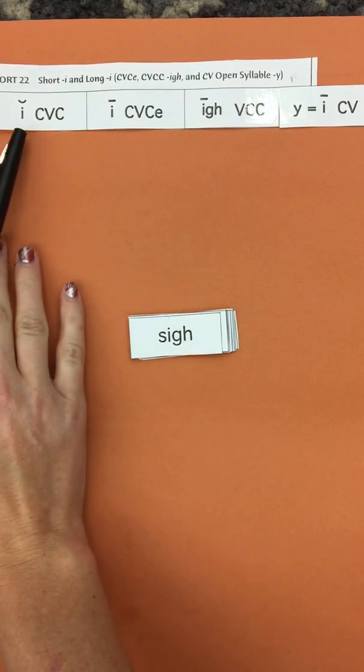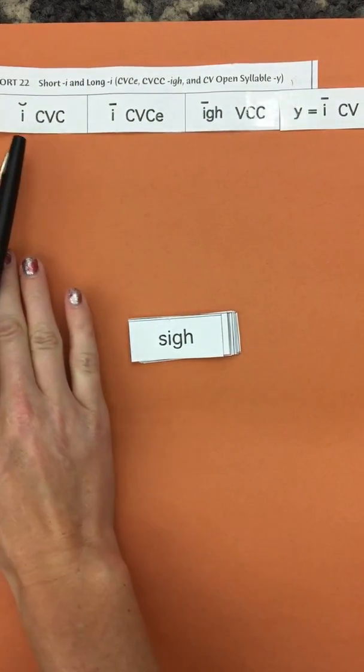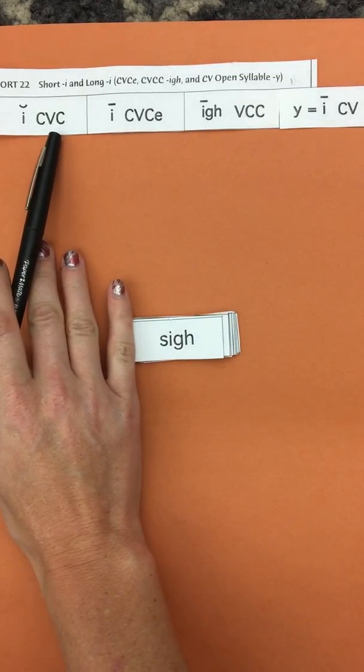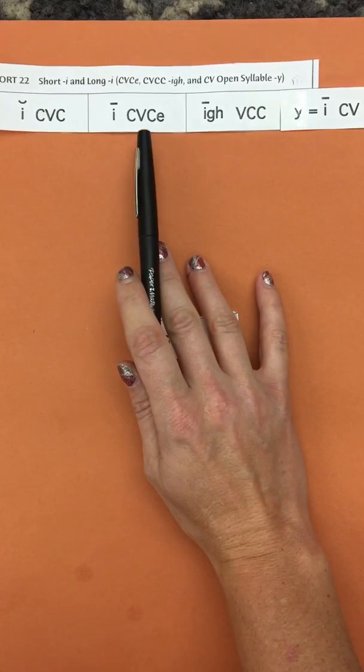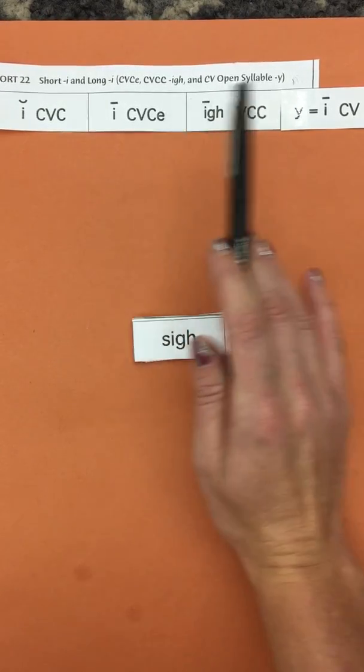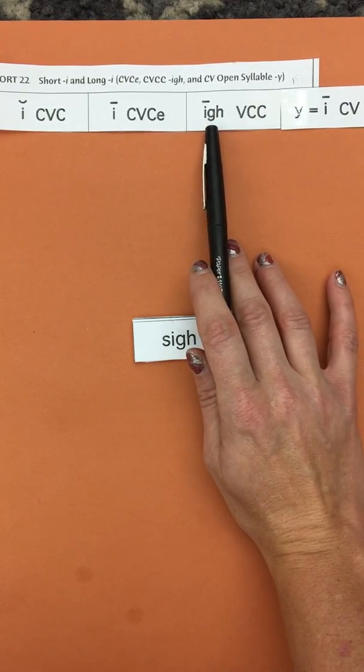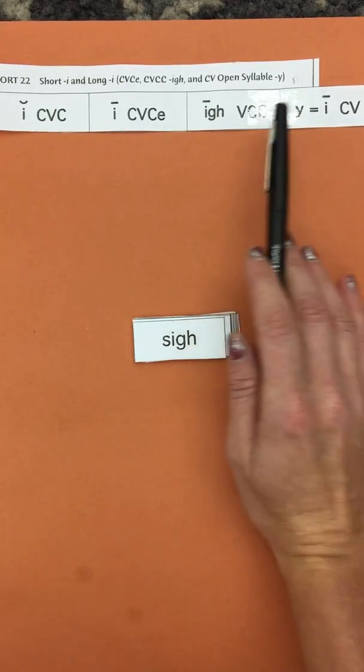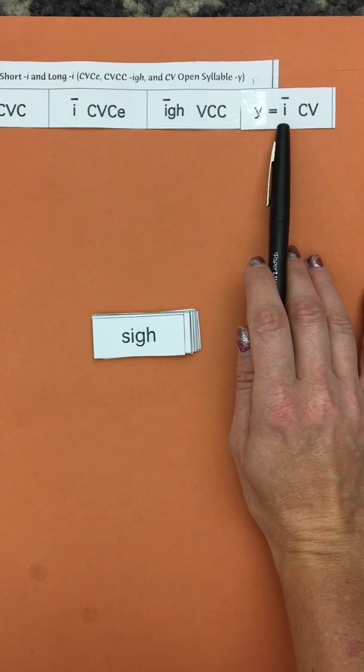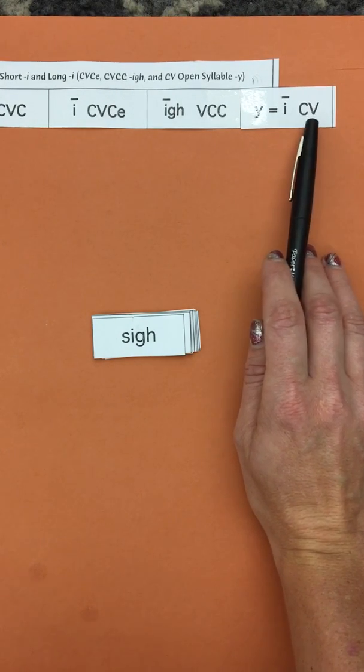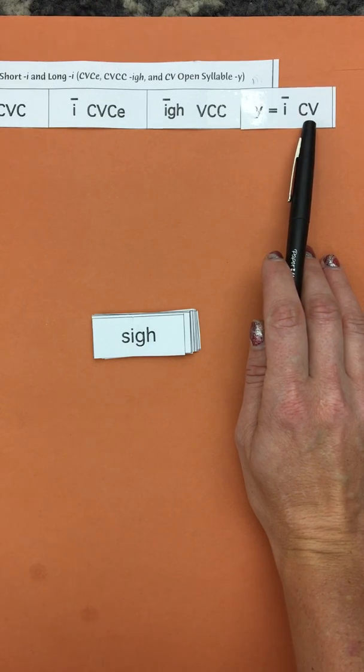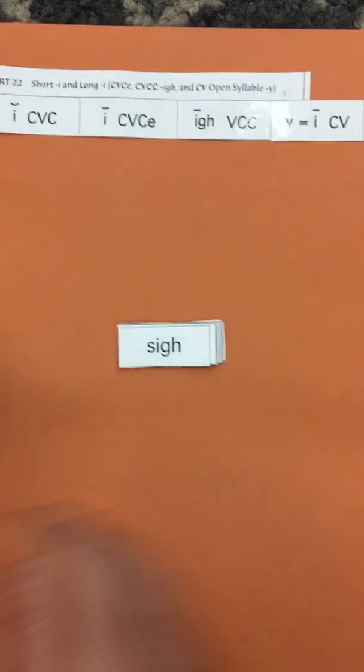Here we are comparing the short I sound IH that you find in CVC, consonant, vowel, consonant words, against the three different ways to make the long I sound with a silent E, spelled with IGH, vowel consonant consonant, and at the end of a word when they're using a Y, but it really says I. Notice how the vowel's at the end, that means it's an open syllable. Open syllables have long vowels.